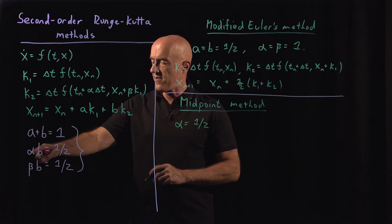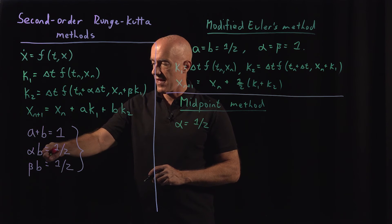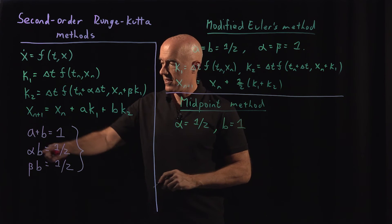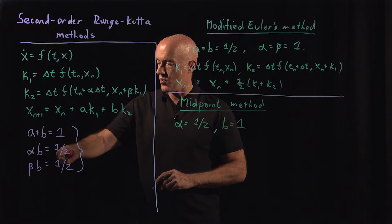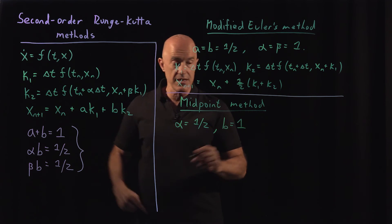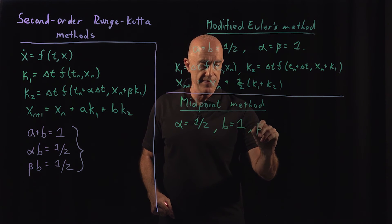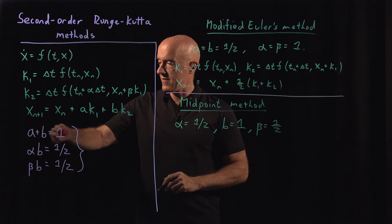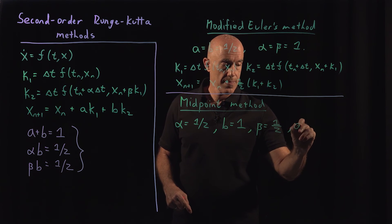So if alpha equals 1/2, then b has to be 1 from the third equation, right? If alpha is 1/2, b is 1. If b is 1, then beta is also 1/2, and if b is 1, then a is 0, okay?